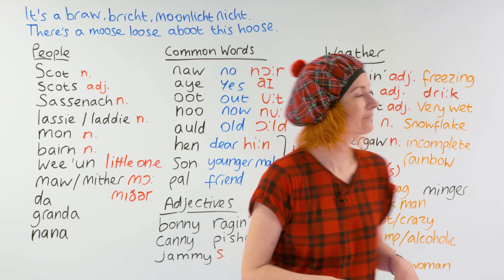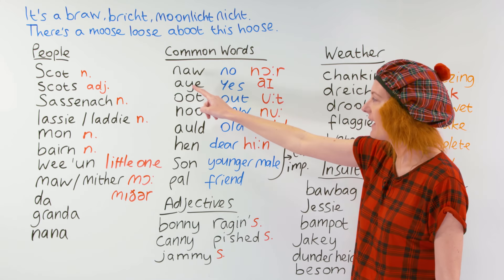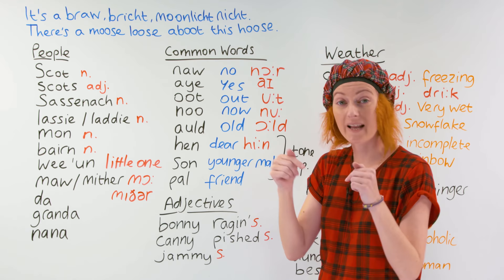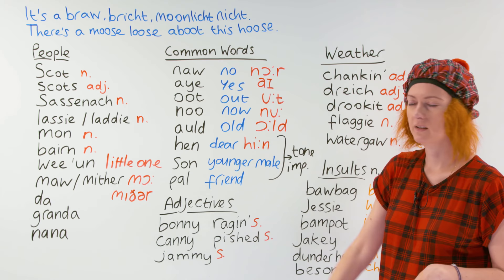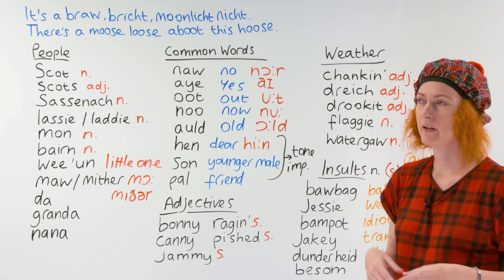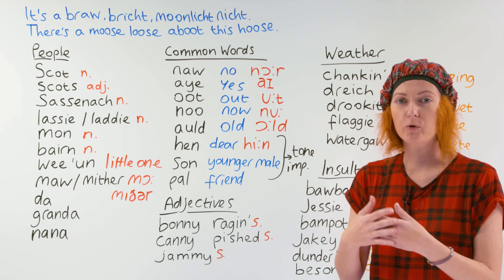Let's look now at the common Scottish words, starting with naw for no. Aye means yes. Oot means get out. Noo means now. Auld means old — 'he's an auld man.' Hen means something like dear or love. It's a term of endearment. You can say that to someone you're familiar with, but it really depends on the tone of voice that you're using.